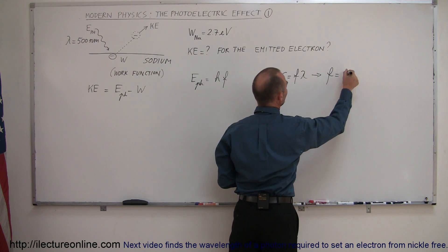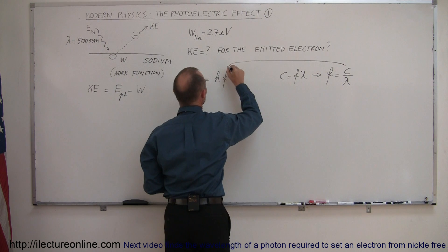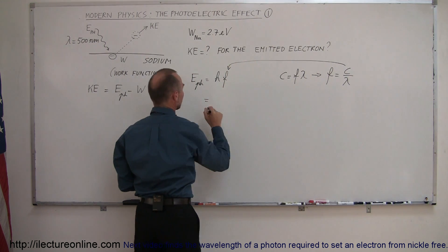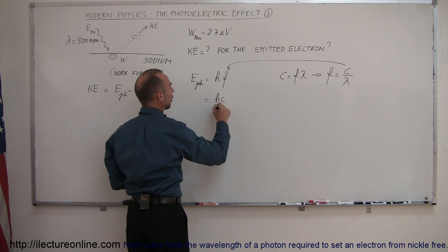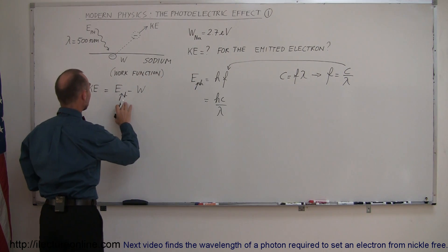we can then say that f can be written as c over lambda. So from here we can say that f, the frequency of the photon, is equal to the speed of light divided by the wavelength. And we can then substitute that back in. So we can say that the energy of a photon is equal to hc over lambda. So we now relate the energy to the wavelength.